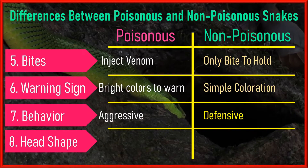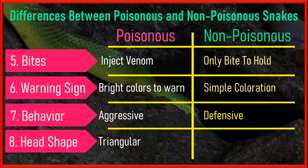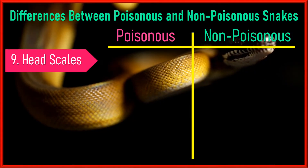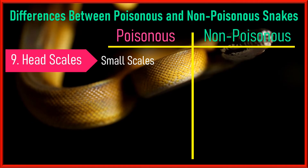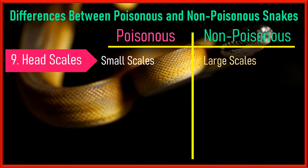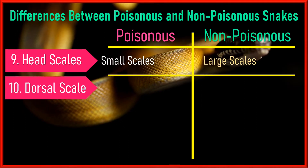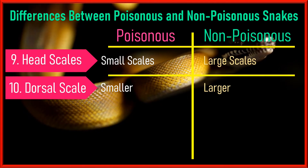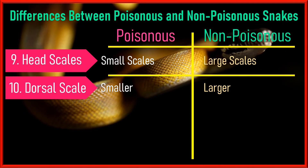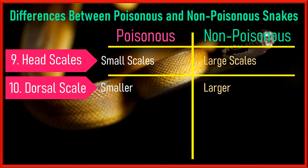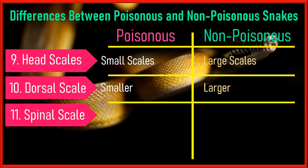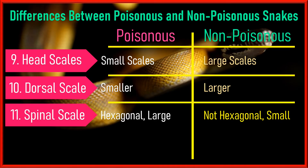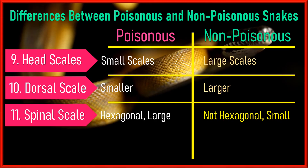Eighth, head shape: venomous snakes have triangular heads while non-venomous snakes have more elongated or narrow heads. Ninth, head scales: venomous snakes have smaller scales on the head while non-venomous snakes have comparatively larger scales. Tenth, dorsal scales: venomous snakes have smaller scales on the dorsal side or back of the vertebral column, while non-venomous snakes have comparatively larger dorsal scales. Additionally, venomous snakes have hexagonal-shaped spinal scales, while non-venomous snakes have varied scale shapes.